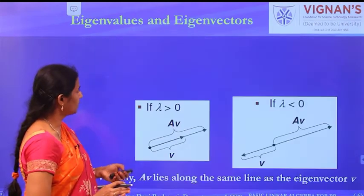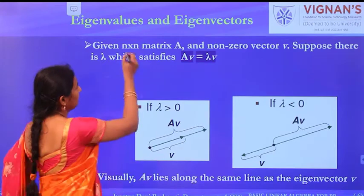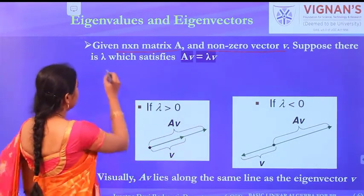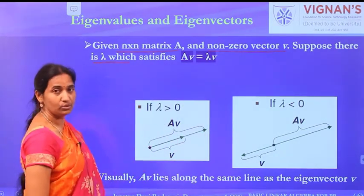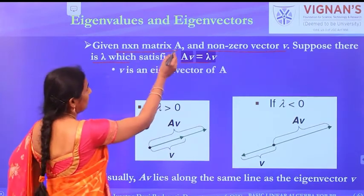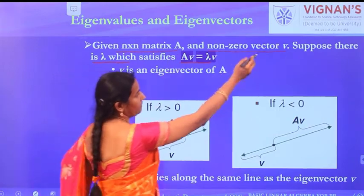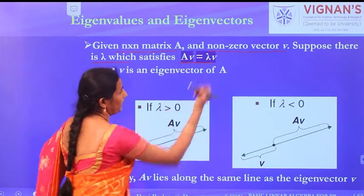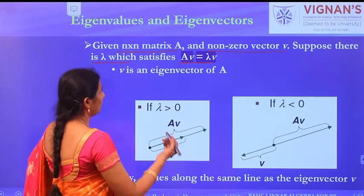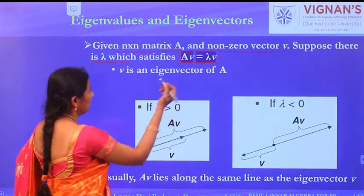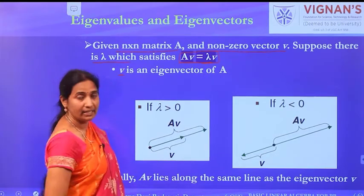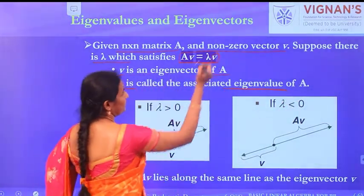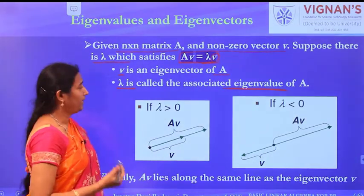Consider a given matrix of size n by n and a non-zero vector V. Suppose there is a scalar lambda — a real value — such that the equation Av = λv is satisfied. In that case, vector V is an eigenvector for matrix A, and lambda is the eigenvalue associated with vector V. That is how eigenvalue and eigenvector are defined.